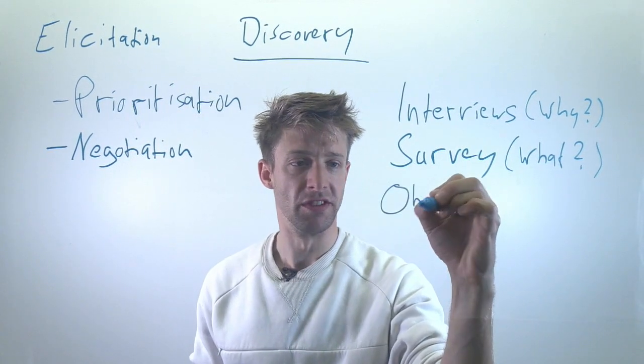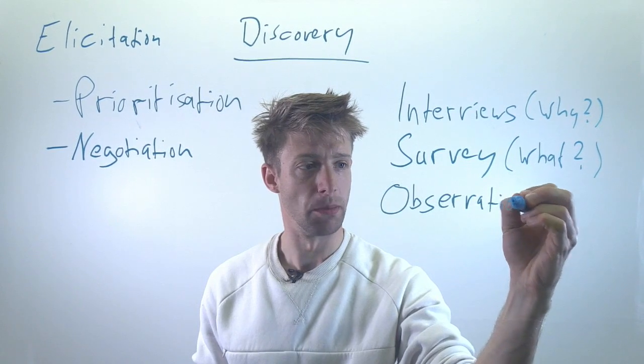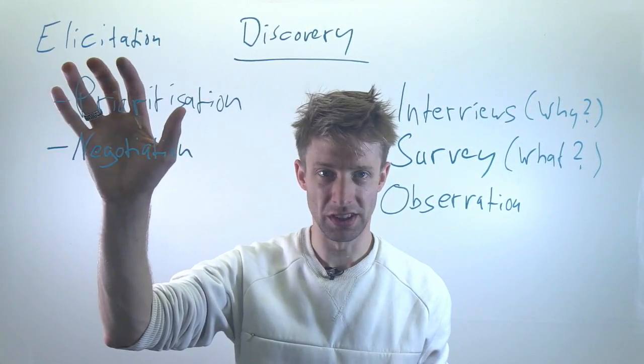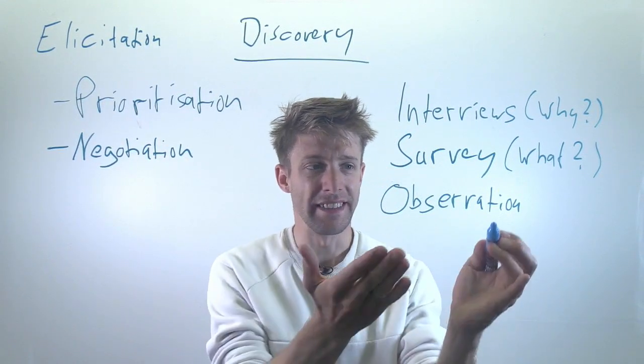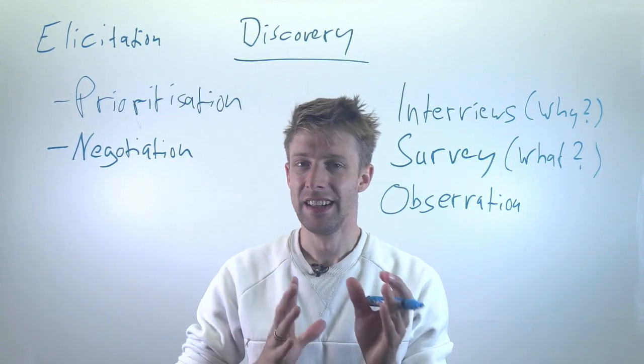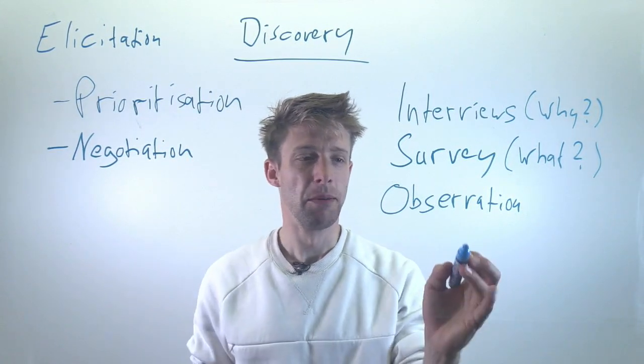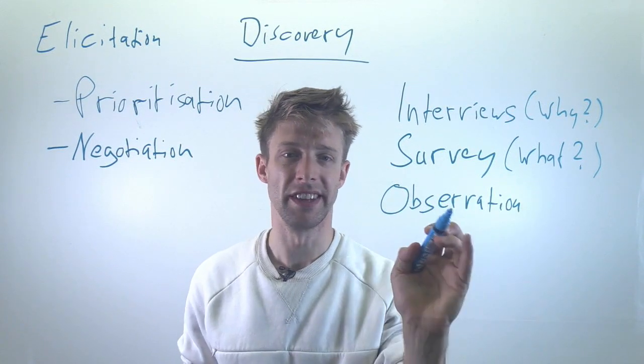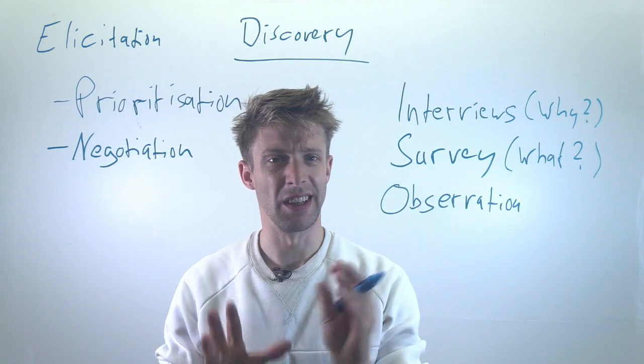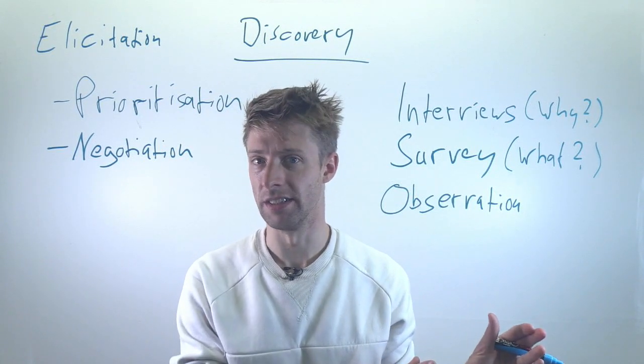Other techniques are observations. So you can actually go and observe people. For example, figure out how are they using the system. And this is a very good way to really find out what they need. Because in an interview, in a survey, they can mainly tell you what they want or what they don't have so far, but it's very hard to find out what they need. For that, for example, observation might be a good way, because you see that they always use the system in a certain way. It's really strange. Maybe they actually need something else.